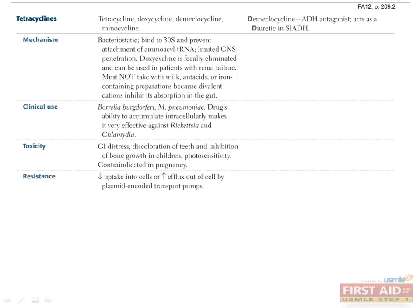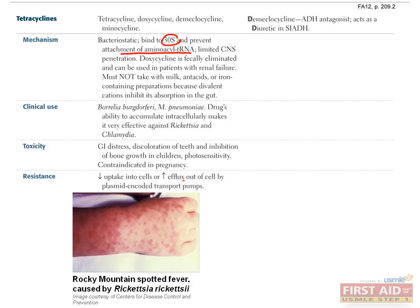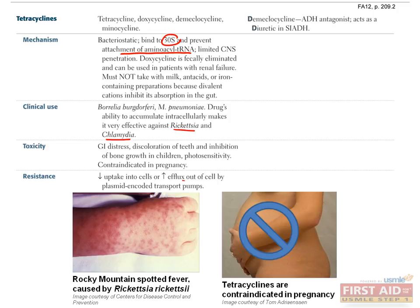The tetracyclines are bacteriostatic; they bind to the 30S subunit of the bacterial ribosome and prevent the attachment of aminoacyl-tRNA. Because of their ability to accumulate in cells, they are particularly effective against intracellular pathogens such as Rickettsia and Chlamydia. Tetracyclines are contraindicated in pregnancy; classic side effects are teeth discoloration in children and photosensitivity. Demeclocycline also acts as an ADH antagonist and is particularly useful to counter the effects of SIADH.